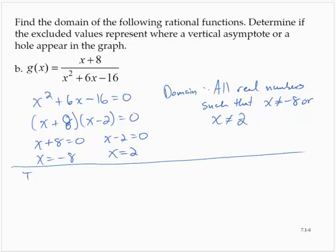Now, if x equals negative 8, we would end up with 0 over 0. If x is equal to 2, we would end up with 10 over 0.